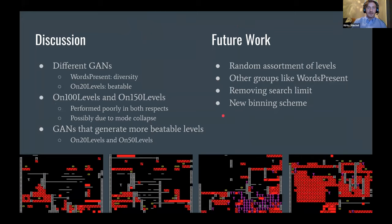So a little bit of discussion about this. If your goal is to produce the greatest diversity, you want to use the words present GAN. If your goal is to get consistently beatable levels, you want to use the On-20 levels GAN. The On-100 and On-150 levels GAN performed poorly in both respects of diversity and beatability. But this is possibly due to mode collapse, which is essentially where the GAN gets stuck generating one type of level and doesn't expand.